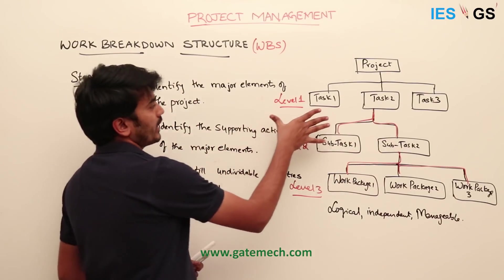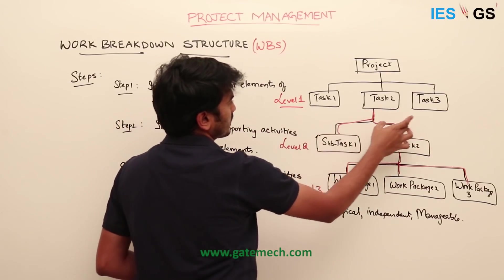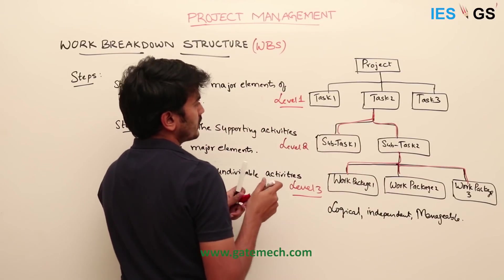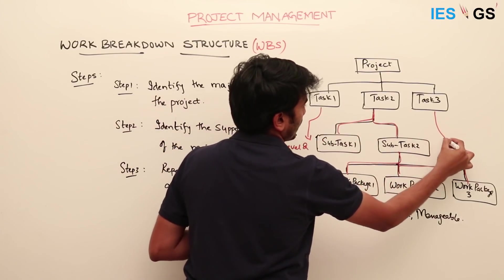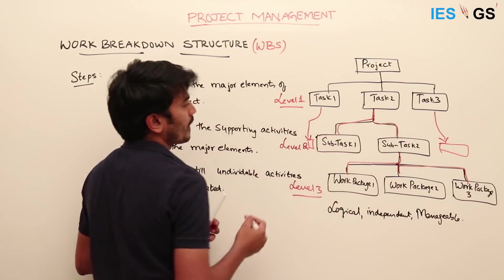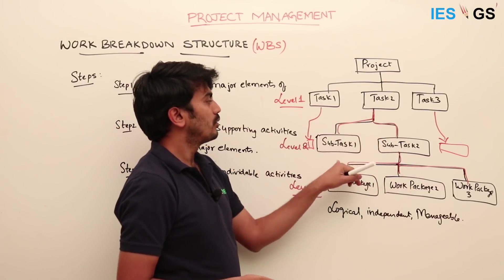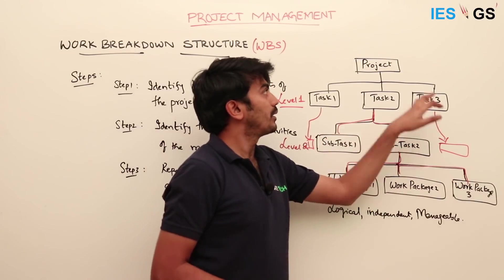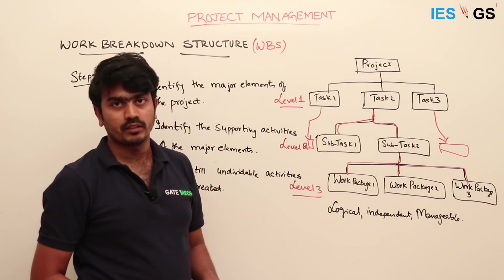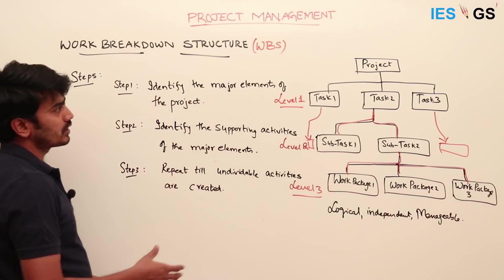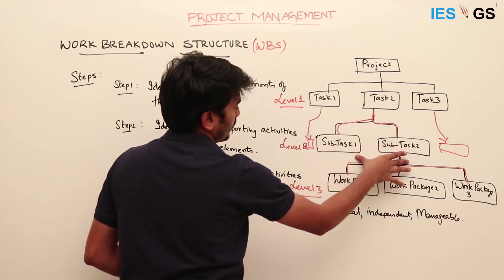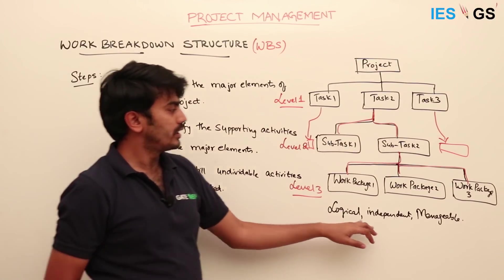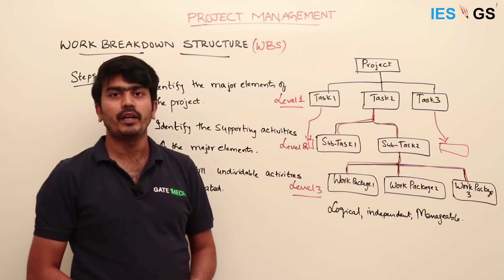At every level, when you sum up all the activities at that level — say Level 2 — they will form the complete project. Similarly at Level 3, they will form the complete project. Task 1 and Task 3 will also have their own activities at Level 2; for illustration, only Task 2 activities were shown. You can see we are following a top-down approach, breaking the project into tasks and then into sub-tasks. Work breakdown structure follows this top-down approach to find the detail-level work packages, based on which we can estimate the time and cost of each activity.